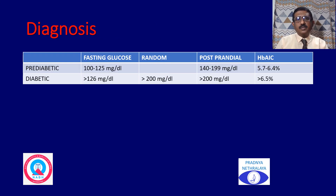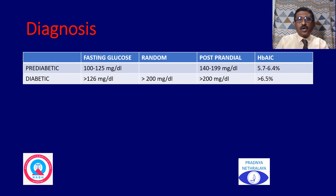How do you diagnose diabetes mellitus? Diagnosis is based on symptoms and blood tests. According to WHO, a fasting blood sugar level between 100 to 125 mg/dL, or a postprandial blood sugar between 140 to 199 mg/dL, or an HbA1c less than 6.4 is considered pre-diabetic. A person is considered diabetic if fasting blood sugar is above 126 mg/dL, random or postprandial blood sugar is greater than 200 mg/dL, or HbA1c is 6.5 or above.